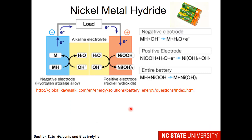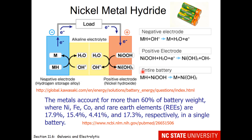Nickel metal hydride batteries are a little bit difficult to explain based on the chemistry you know so far. They involve nickel, hydrogen, and also some rare earth elements — mostly nickel, a little bit of iron, a tiny bit of cobalt, and then these rare earth elements. Guess where rare earth elements are found and mined in the globe? China. We have some in the United States, but we are reliant on trade to make sure that we have the rare earth elements needed for nickel metal hydride batteries.